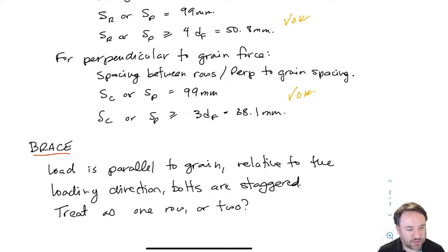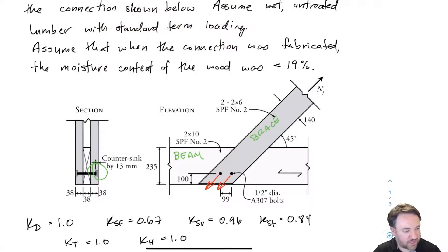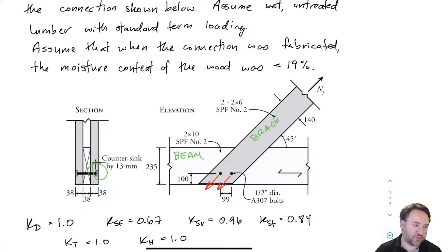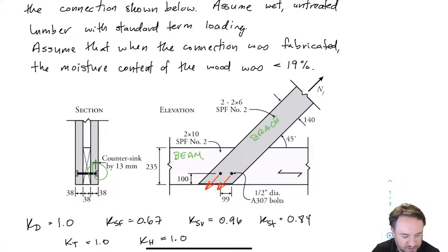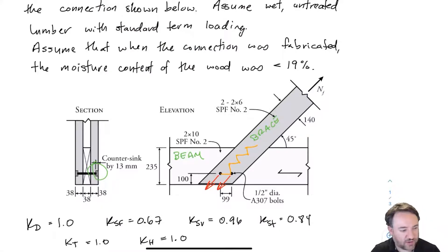Now let's continue and do the spacing checks for the brace members. From the point of view of the brace, the load in the bolts is parallel to the grain of the brace, so we only have parallel-to-grain load in the brace. The brace bolt layout is staggered — the bolts are not directly perpendicular-to-grain adjacent to each other. So we need to figure out whether to consider that as one row of bolts or two rows of bolts.